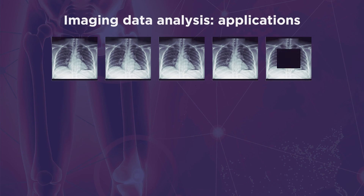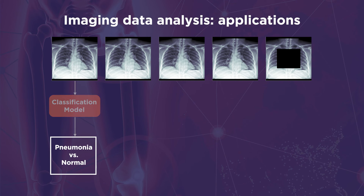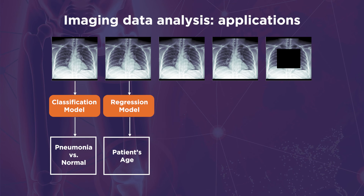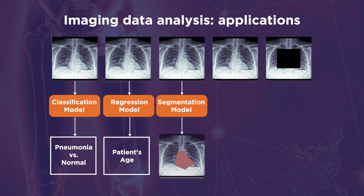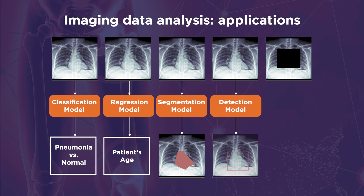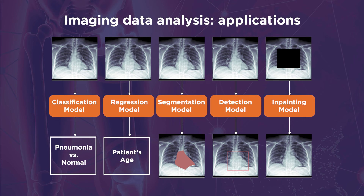When it comes to medical imaging, machine learning models have five primary uses. Consider an anterior-posterior chest radiograph as an example. A machine learning model may be taught to analyze this radiograph and determine whether or not it is from a patient with pneumonia — such use cases are referred to as classification. Another model can use the same radiograph to predict the patient's age or other quantitative parameters such as illness severity, which is known as regression. Segmentation and object detection models can pinpoint a specific region of interest: a segmentation model will paint that region, while an object detection model will draw a bounding box around it. Finally, generation models can produce synthetic radiographs or in-paint a section of an incomplete radiograph with synthetic data.